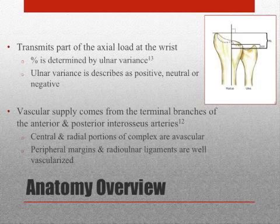Vascular supply comes from the terminal branches of the anterior and posterior interosseous arteries. The central and radial portions of the complex are avascular and are considered the debridement zone. Peripheral margins and radial ulnar ligaments are well vascularized and are considered the repair zone. These two components play a large role in the severity, prognosis, and the surgical management approach taken to treating TFCC injuries.